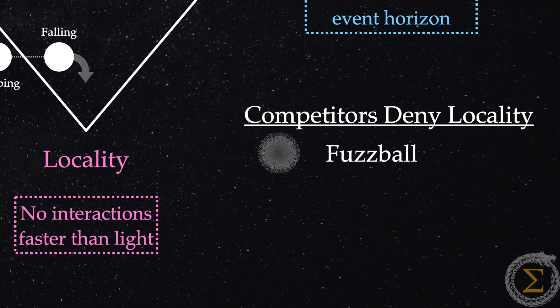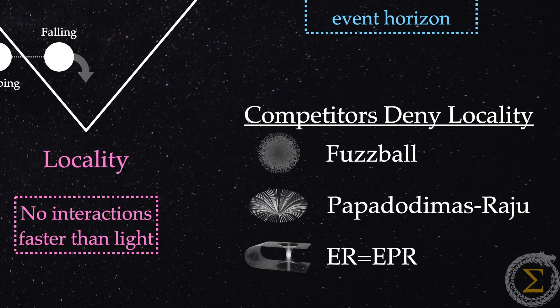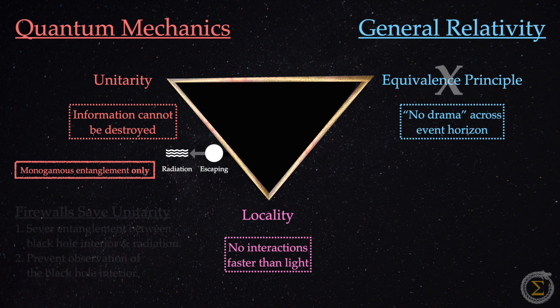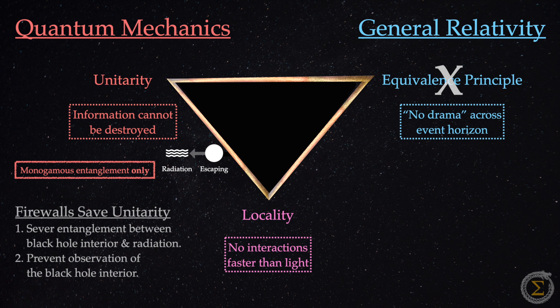And we touched on three alternate theories, which in their own ways challenge locality. Firewalls offer a potential solution by severing entanglement between the black hole's interior and Hawking radiation. No observer can see the black hole's interior. Locality is preserved, but at the great cost of Einstein's equivalence principle.